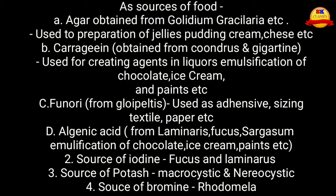Alginic acid, obtained from Laminaria, Fucus, Sargassum, etc., is used as an emulsifier for chocolate, ice cream, paints, etc. Fucus and Laminaria are a source of iodine. Microcystis and Neurocystis are a source of potassium, and Rhodomela is a source of bromine.